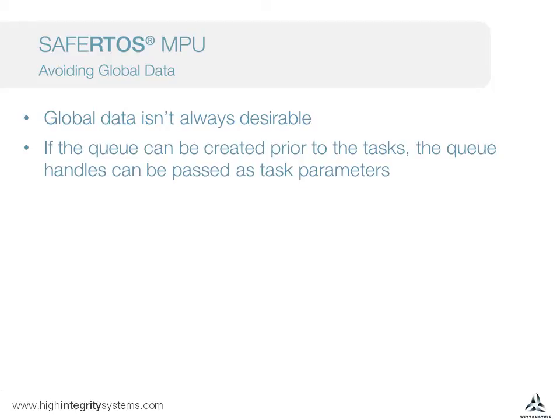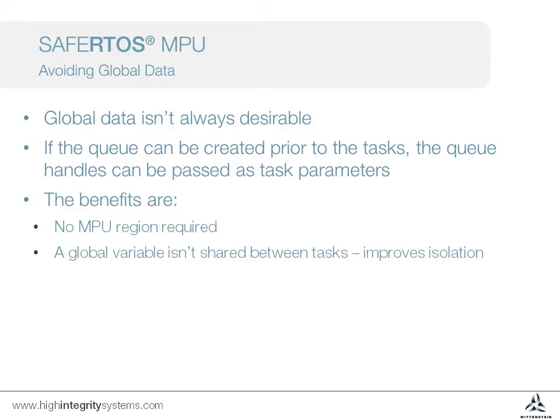If the queue can be created prior to the tasks, then the queue handle can be passed to each task via the task parameters. This has two main benefits. Firstly, no MPU region is required. And secondly, there's no global data structure shared between the tasks. This improves the isolation — for example, corruption of the variable in one task doesn't affect the behaviour of the other task.